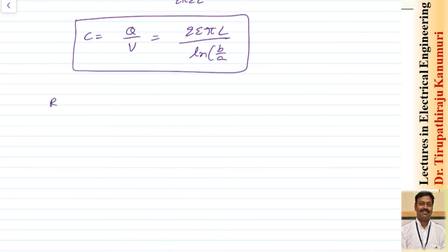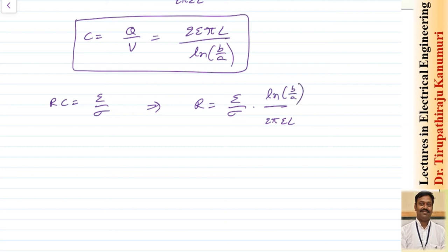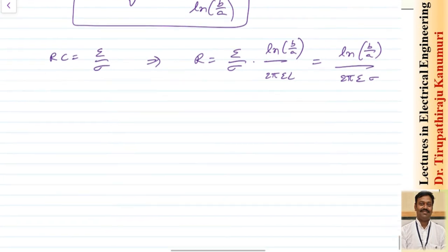The leakage resistance for the coaxial capacitor is found using R·C equals epsilon divided by sigma. Substituting the capacitance C equals 2π·epsilon·L divided by ln(b/a), we get R equals epsilon divided by sigma times ln(b/a) divided by 2π·epsilon·L, which simplifies to R equals ln(b/a) divided by 2π·sigma·L.